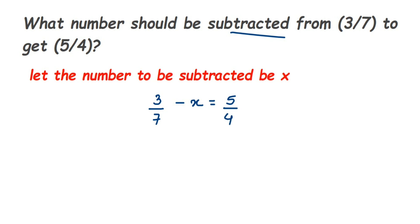There are two ways of solving it. One is you transpose 5/4 to this side and minus x to the other side. Second is you transpose 3/7 only to this side and solve it. Both will give you the same answer.